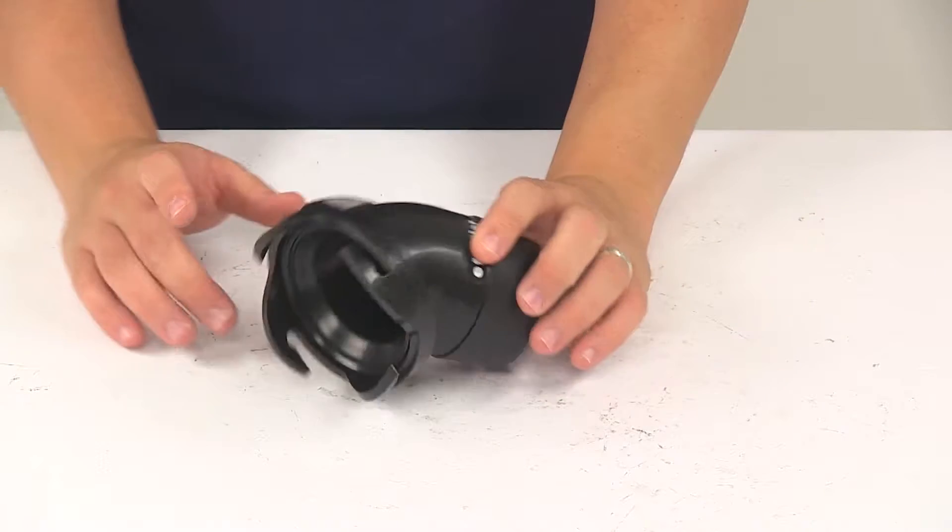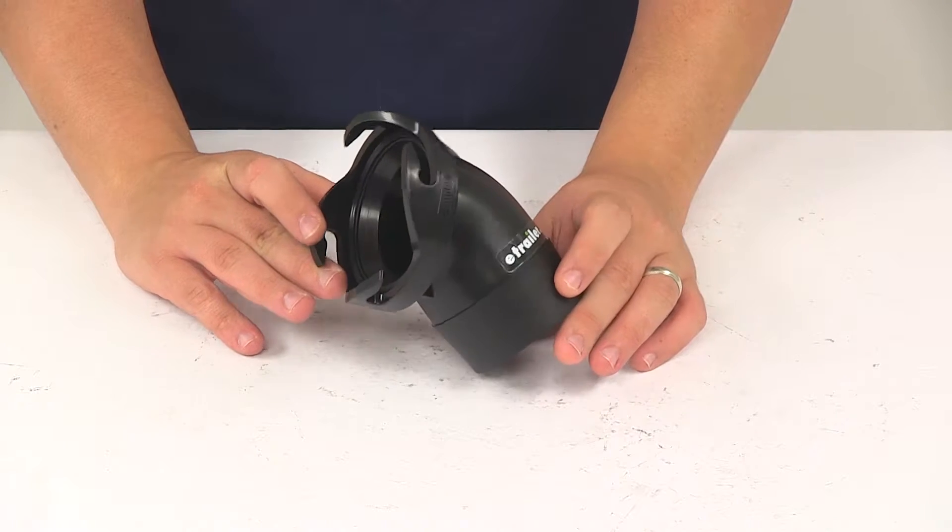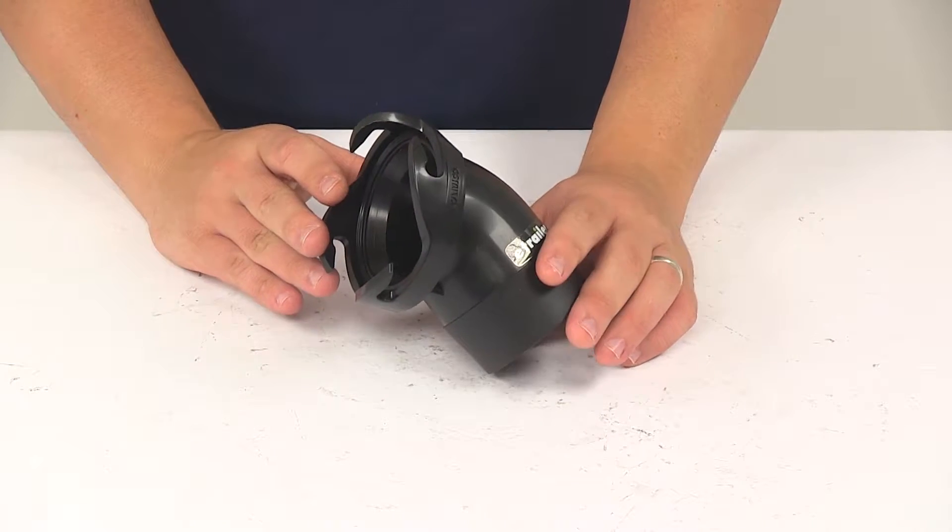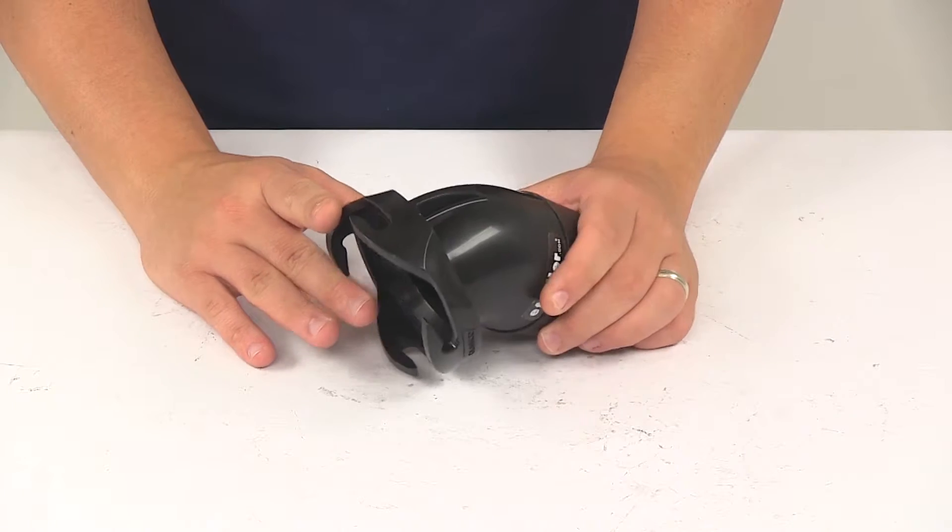Today we're going to be taking a look at the Kamco RV 45 degree sewer hose adapter. This 45 degree adapter reduces stress on your RV sewer hose.